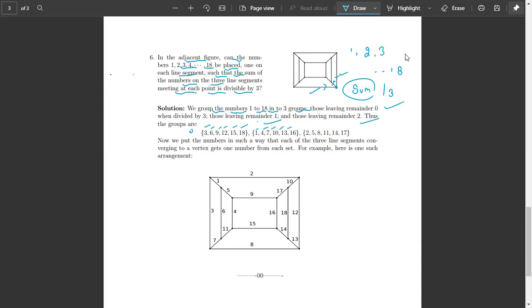1, 4, 7, 10, 13, 16 are the numbers which have remainder 1, and 2, 5, 8, 11, 14, 17 are the numbers which have remainder 2.